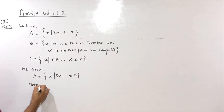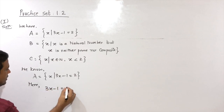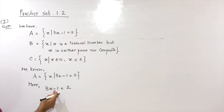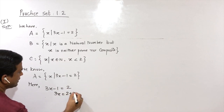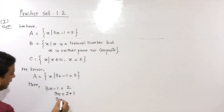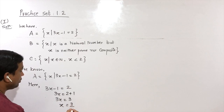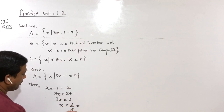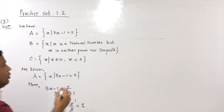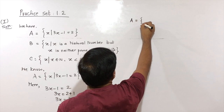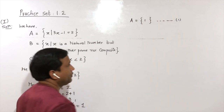For set A: we consider the equation 3X − 1 = 2. The 1 moves to the other side and becomes positive, so 3X = 2 + 1 = 3, therefore X = 3/3 = 1. So set A = {1}. Let this be statement number 1.